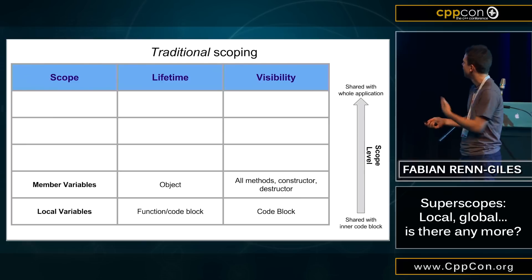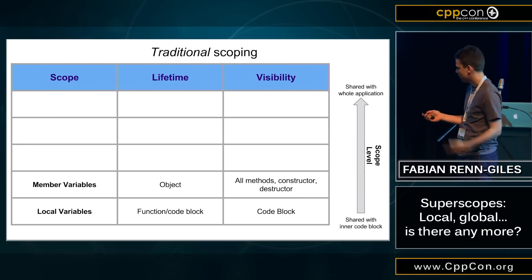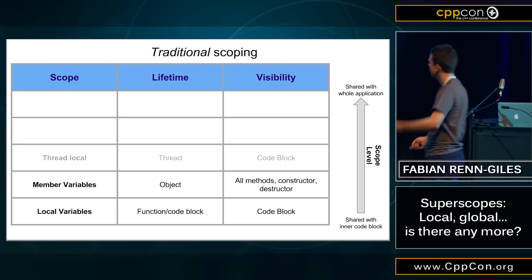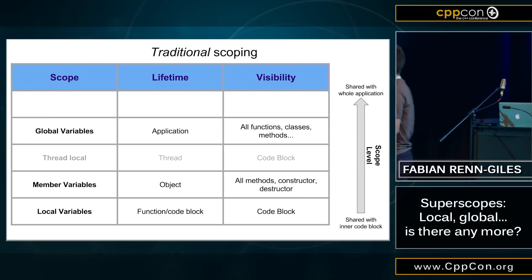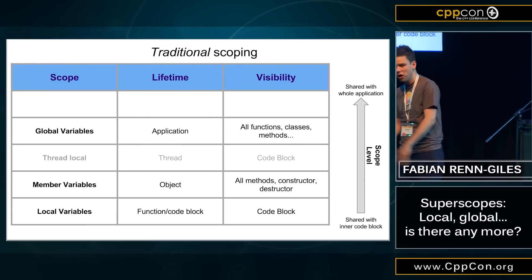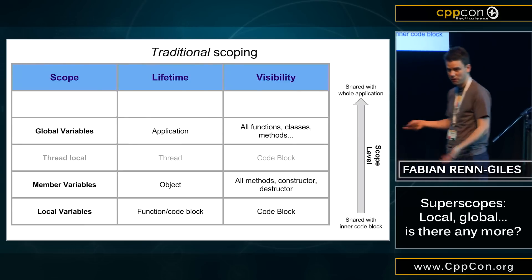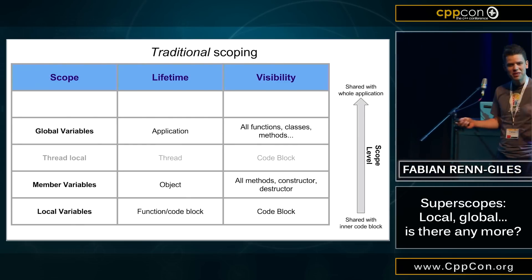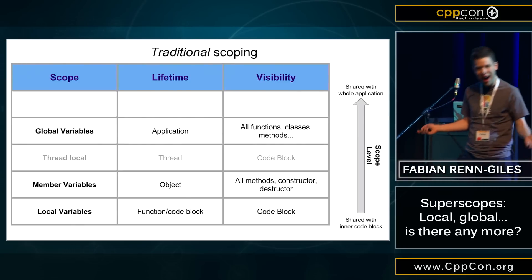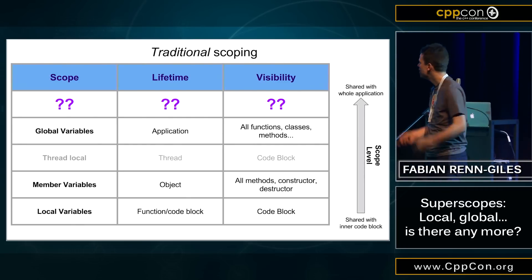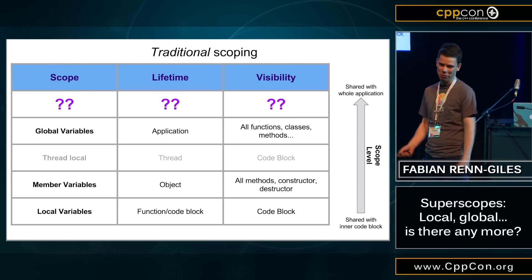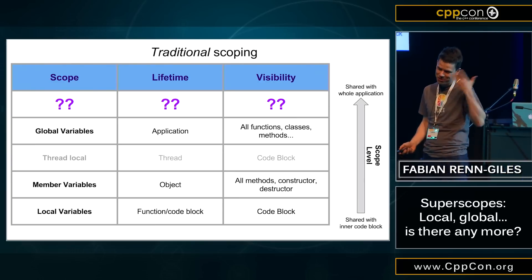Then in C++14 you have thread_local, and then you have global variables which are connected to the lifetime of the application. But can we somehow go even higher? Is there a scope level that's even higher than global scope? That was sort of my idea.